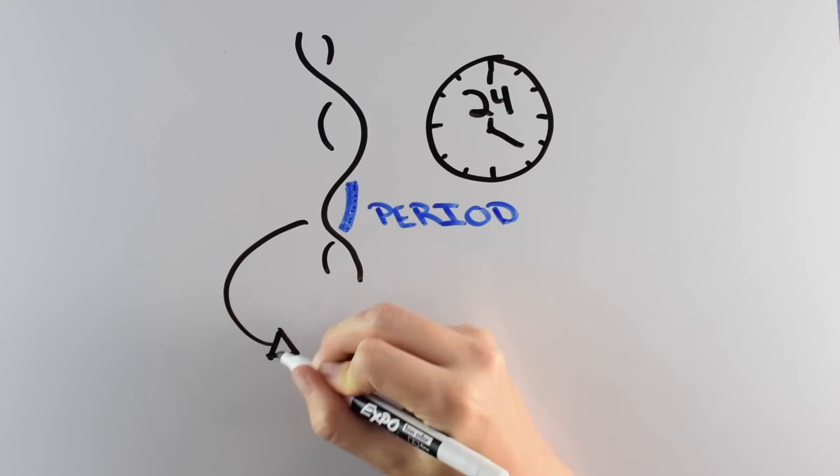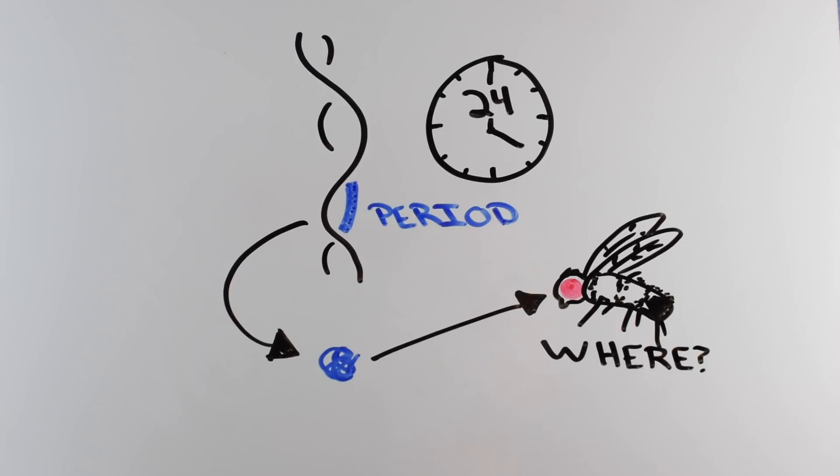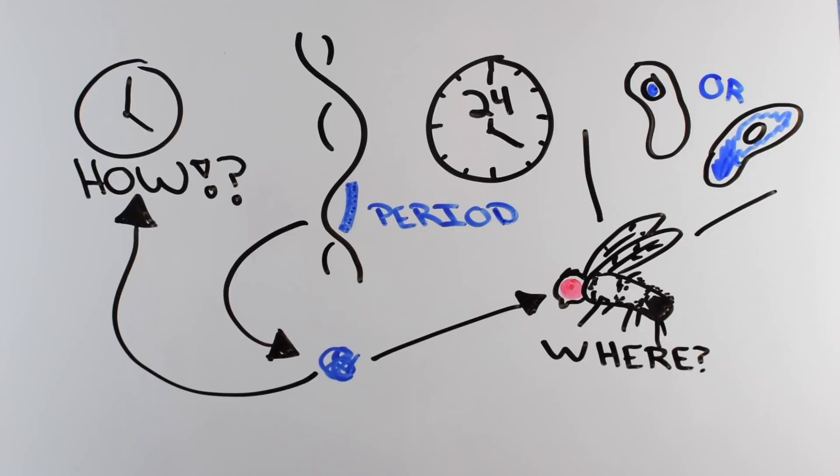Was it making a protein that controls the timing? And if so, what was that protein doing? And where was this protein in the fly, or even in individual cells of the fly? And finally, how did it change the circadian rhythm?